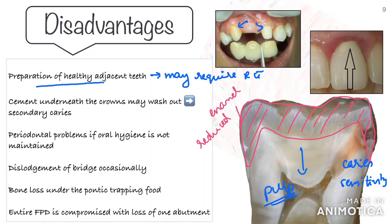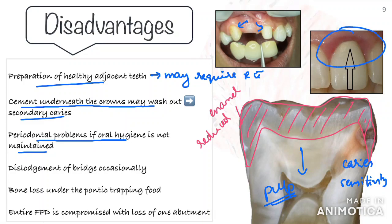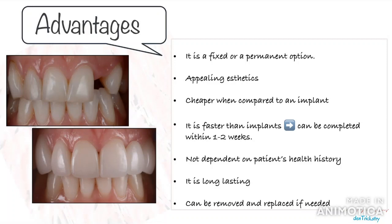Another drawback related to FPD is that the cement underneath the crowns may wash out, creating an area for bacteria to grow on the tooth surface underneath, leading to caries or infection if left untreated. Also, if the crown margins are placed sub-gingivally and oral hygiene is not maintained, it could lead to gingival inflammation or periodontal problems. Another disadvantage is that over time there may be some bone loss below the pontic, leading to entrapment of food particles. One major issue is that if one tooth is lost over time, the entire structure is compromised and has to be replaced.